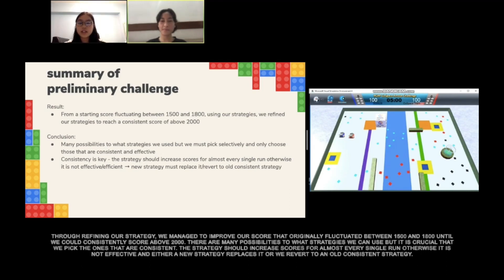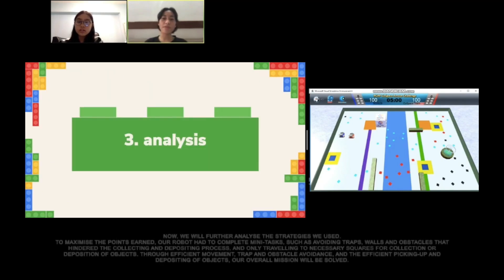There are many possibilities to what strategies we can use, but it is crucial that we pick ones that are consistent. The strategy should increase scores for almost every single run. Otherwise, it is not effective and either a new strategy replaces it, or we revert to an old consistent strategy. Now, we will further analyze the traps with strategy changes.